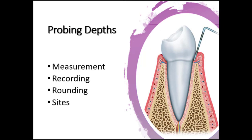When we probe, we're measuring from the tip of the free marginal gingiva all the way to the base of the pocket. The pressure we should be using would be about 10 to 20 grams. A good way to test your pressure is to use a probe on your nail cuticle — you'll feel the probe hit resistance, and if you keep pushing you'll feel pressure and eventually discomfort. Ideally we want to stop the probe when we meet resistance and before we cause discomfort.